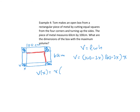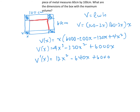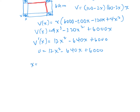Expanding the two brackets first and then multiplying by x, we get 4x cubed as the leading term. That gives our volume equation. To find the maximum volume we find the derivative, set it equal to zero to get the critical values. There are large numbers so I'll use the quadratic formula rather than trying to factor.